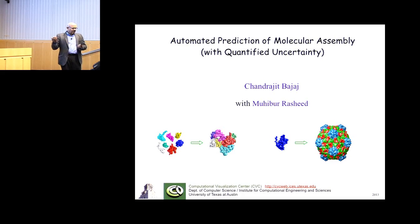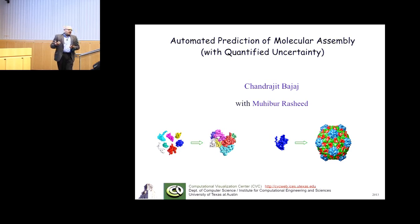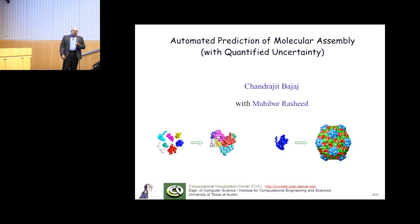This talk is couched in some computer science and some mathematics - that's what I know - and it's tuned to the application of prediction. Part of the message is also a framework I've been developing this last year with my PhD student Mohibur Rashid, following on the footsteps of others who've been working in similar areas, on providing proof certificates for predictions - something we call quantified uncertainty.